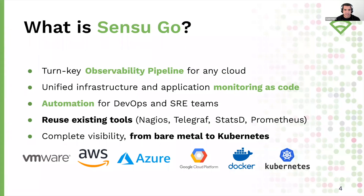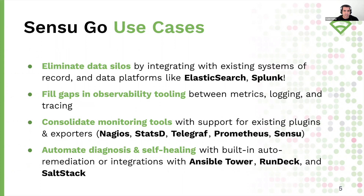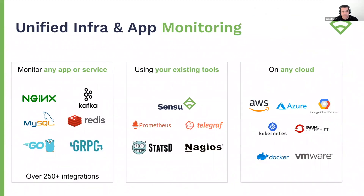Sensu is the turnkey observability pipeline that delivers monitoring as code on any cloud. Sensu provides a flexible automation platform for DevOps and SRE teams, allowing them to reuse their existing monitoring and observability tools and integrate with best-of-breed data platforms. With Sensu, you get complete visibility from bare metal to Kubernetes. Popular use cases include eliminating data silos by integrating with existing systems of record and best-of-breed data platforms like Elasticsearch and Splunk, consolidating monitoring tools with support for your existing plugins and exporters, and automated diagnosis and self-healing with built-in auto-remediation.